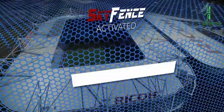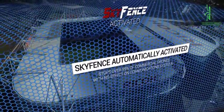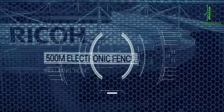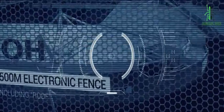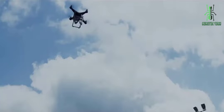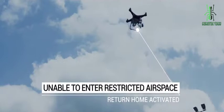Skyfence is a physical barrier that blocks drones from entering a designated area. It can be used to protect sensitive areas like airports, military bases, and prisons. Skyfence works by using radio frequency jamming to disrupt the drone's communication with its operator. This forces the drone to land or return to its starting point.